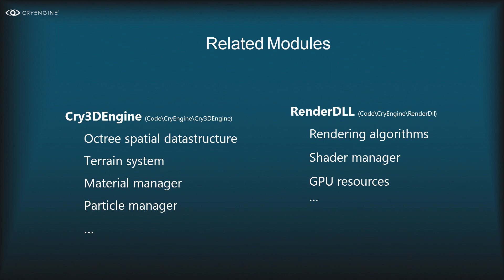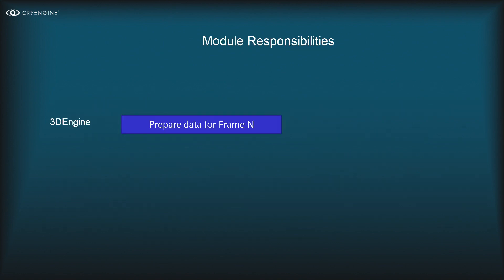Functionally, the modules cover different areas. The 3D engine is mostly in charge of processing objects, determining visibility, and updating objects, whereas the renderer is the one that interfaces with the graphics APIs. The 3D engine holds the scene data structure (octree), the terrain system, and the material manager. The renderer holds the shader manager, GPU resources, and actual rendering algorithms.